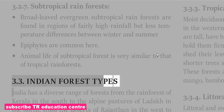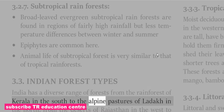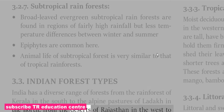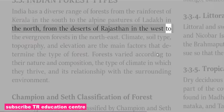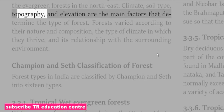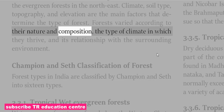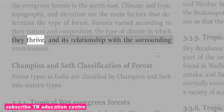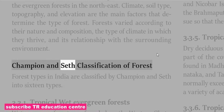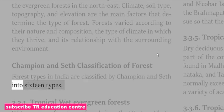India has a diverse range of forests, from the rainforest of Kerala in the south to the alpine pastures of Ladakh in the north, and from the deserts of Rajasthan in the west to the evergreen forests of the northeast. Climate, soil type, topography and elevation are the main factors determining the type of forest. Forest types in India are classified by Champion and Seth into 16 types.